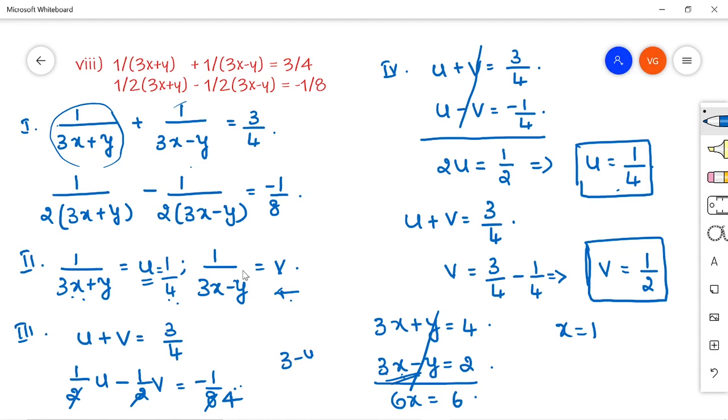Then it will become 3 minus y is equal to 2. So, y is equal to 3 minus 2, which is 1. So, x is equal to 1 and y is equal to 1 is the solution for this given set of equations.